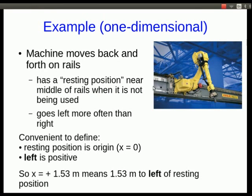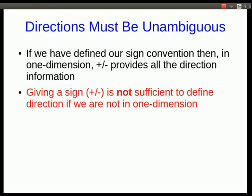So just to illustrate what I mean, here's a one-dimensional motion example. We have this machine that moves back and forth on rails so it only moves in one dimension. It has some resting position and let's say it goes left more often than right. So we might define the resting position as the origin, and because it goes left more often maybe it's convenient to define left as positive. And so now if I say x is plus 1.53 meters, it's unambiguous that that means 1.53 meters to the left of the resting position. So positive is sufficient to define a direction here.